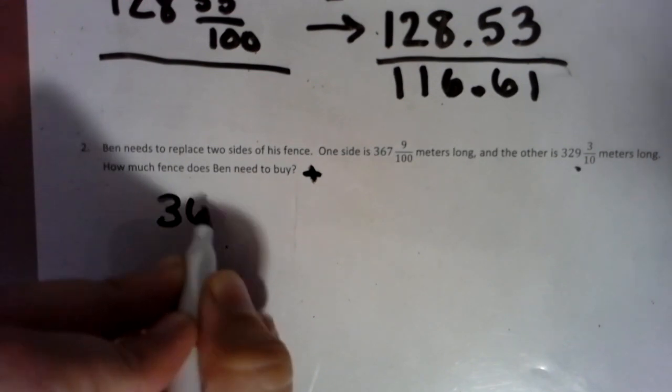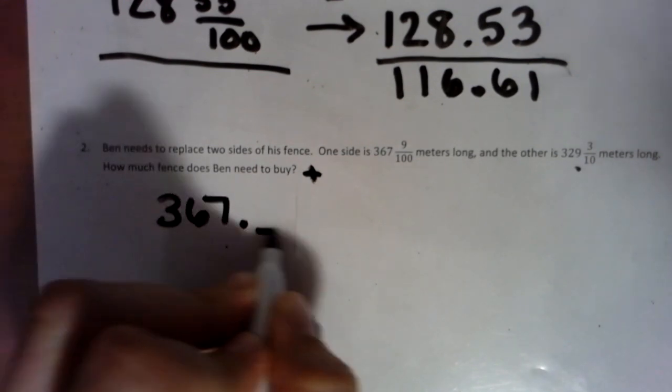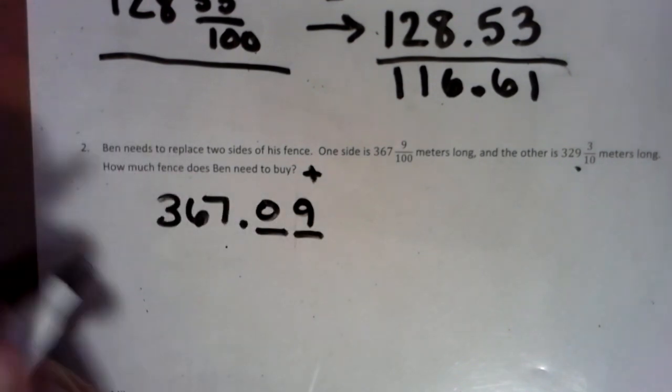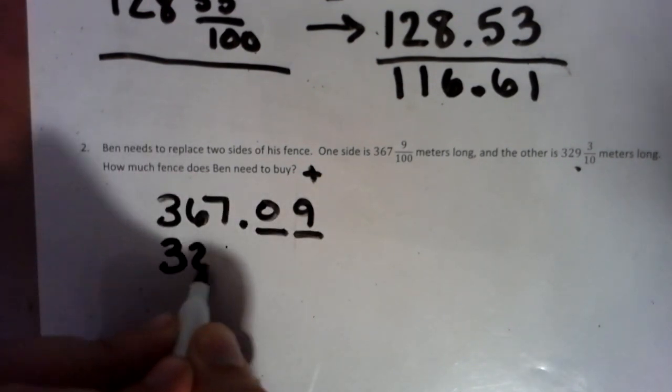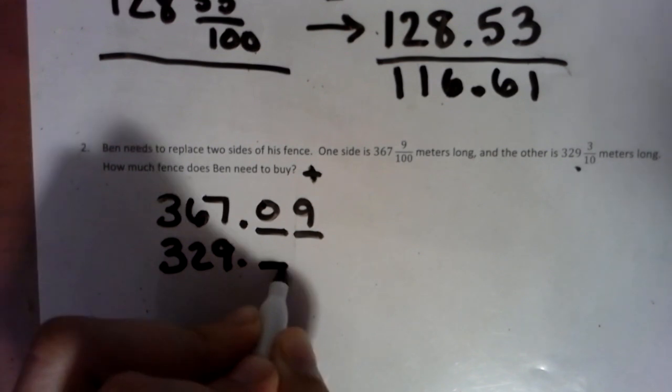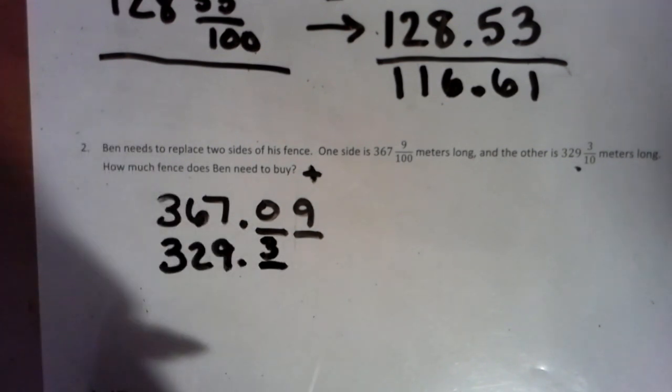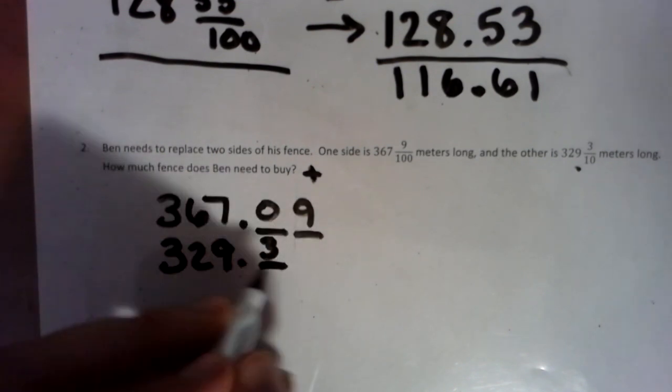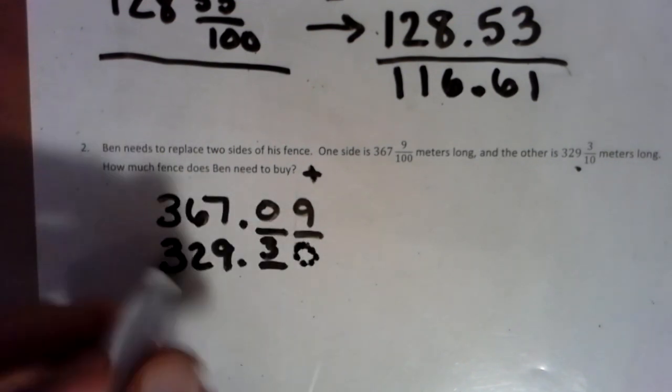So we have 367 and 9 hundredths. So we can put a zero in that place. 329, three tenths. Tenths is there. We put the three there. What could we put in this empty space just so it's level? That is correct. We can put a zero.